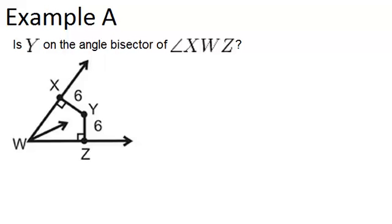In example A, it says, is Y on the angle bisector of angle XWZ? So here's Y, and what I notice in this picture is two things.